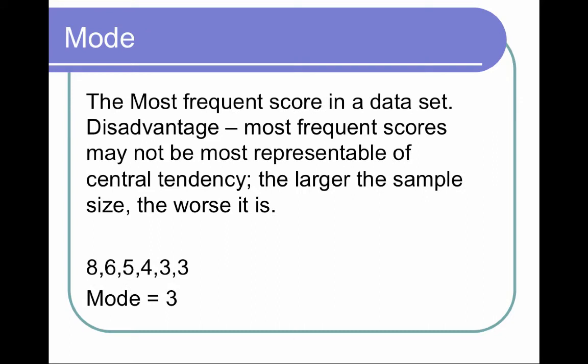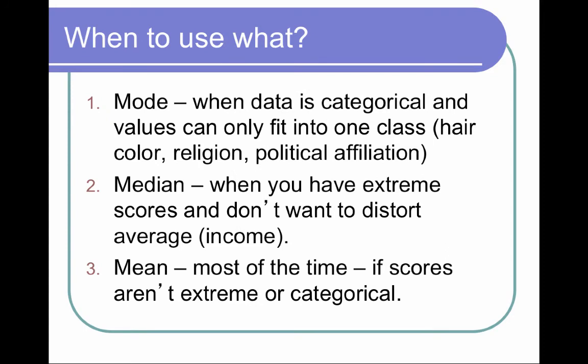The third type in that umbrella is the mode. The mode is the most frequent score in a data set. If you look down in this data set, you've got the only number appearing more than once is a 3, and so the mode in this case is a 3. It's the most frequent score. The disadvantage is that it may not really be a great measure of central tendency. The larger the sample size, the worse it is.